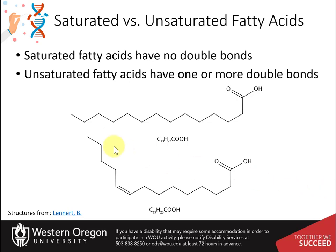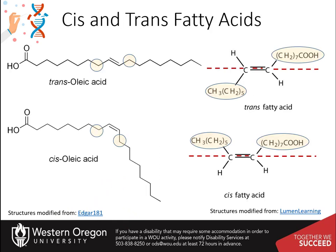Fatty acids can either be saturated with hydrocarbons and contain no double bonds, or they can be unsaturated and contain one or more carbon-carbon double bond. This diagram compares the two isomeric forms of fatty acids that can result from introducing a double bond into the carbon backbone: the cis and the trans isomers. In a trans double bond, the major constituents are located on opposite sides of the double bond, whereas in a cis double bond, both major constituents are on the same side.